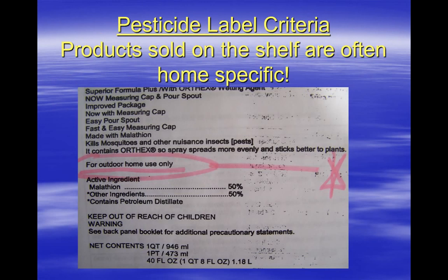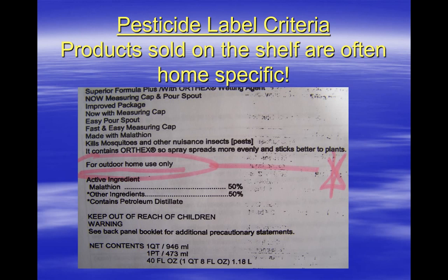The first label we will look at has a couple of problems. This particular label contains an active ingredient which is not on the Nevada approved list. In addition, the product label states that it is only for outdoor home use and cannot be used in an indoor commercial facility. Pesticide labels either have instructions for home and residential uses or commercial use with few exceptions. Most general use products that can be found in nurseries, home improvement stores, and other retail establishments are home use products. FIFRA 25B exempted pesticides do not need to meet this criteria to be used legally in an indoor grow facility.